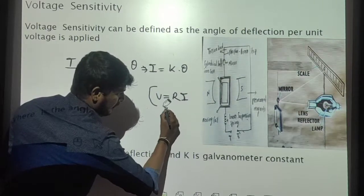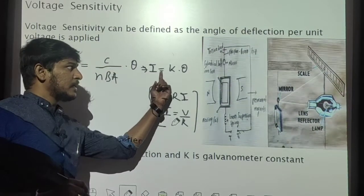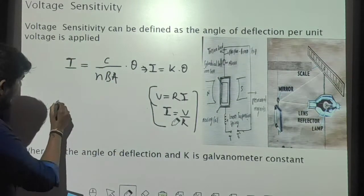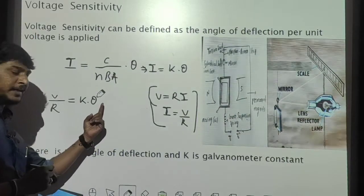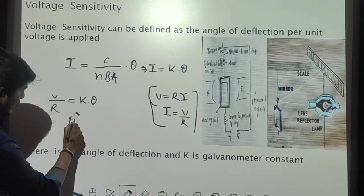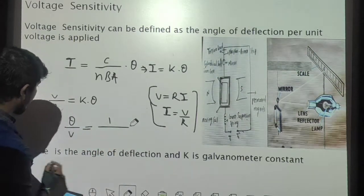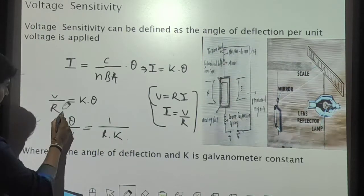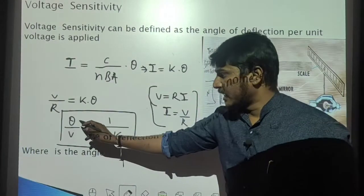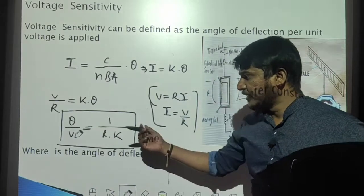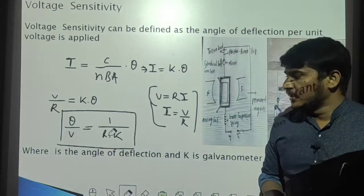Rearranging V equals RI gives I equal to V divided by R. Substituting this I value into the equation I equal to K into theta, we get V divided by R is equal to K into theta. Rearranging these terms gives theta divided by V is equal to 1 divided by R into K. This is the equation for voltage sensitivity — the angle of deflection produced for unit volt — which equals 1 over R times K, where R is the resistance and K is the galvanometer constant or current reduction factor.